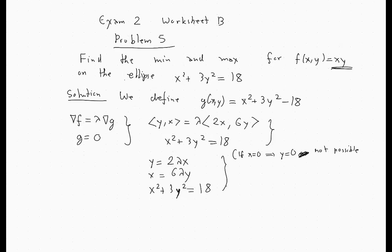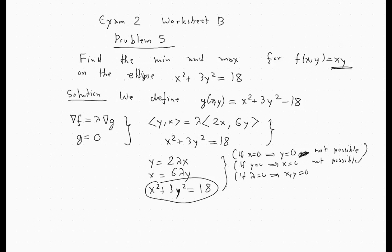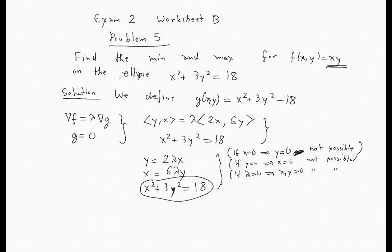Same, if y is zero, then the second equation tells you that x is zero, again not possible. And of course, if you had that lambda is zero, then both x and y would be zero by the first two equations, again not possible. Which means that x ≠ 0, y ≠ 0, lambda ≠ 0.